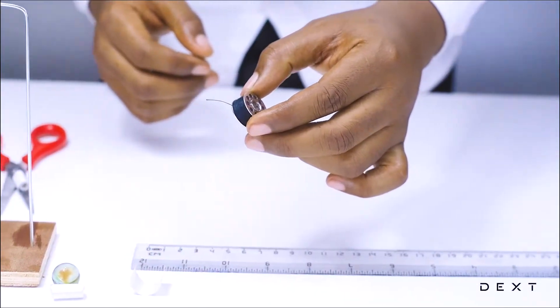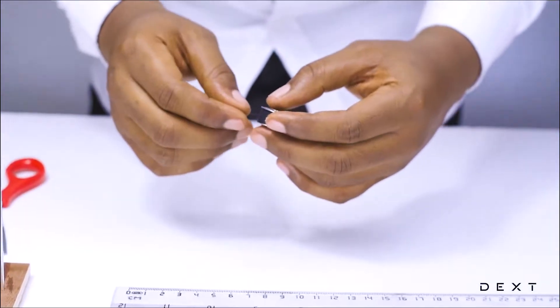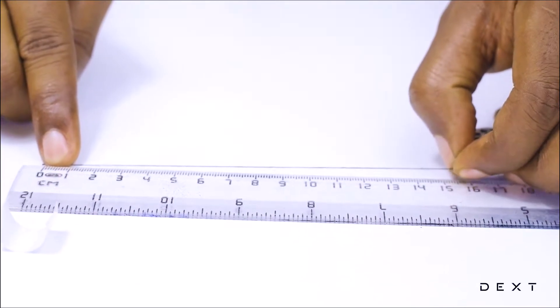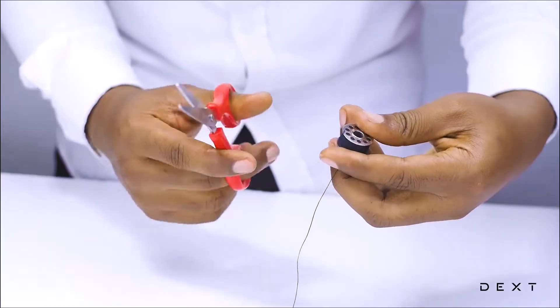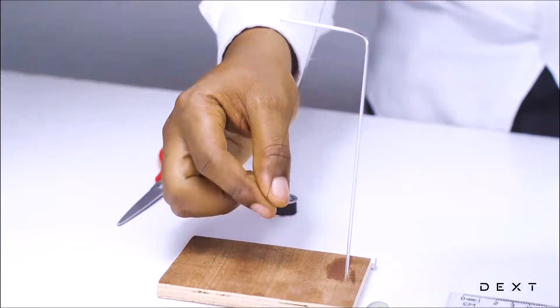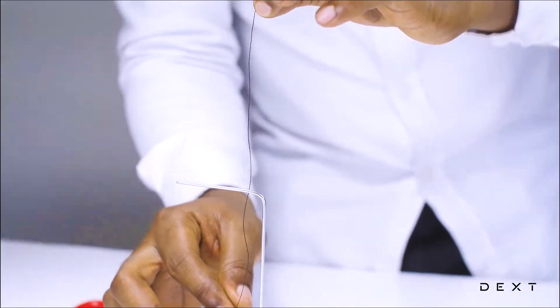Before we do that, we are going to need to cut a certain length of string, particularly 15 centimeters. Let's go ahead and cut that. Now that should just be about enough for us to build our simple pendulum.